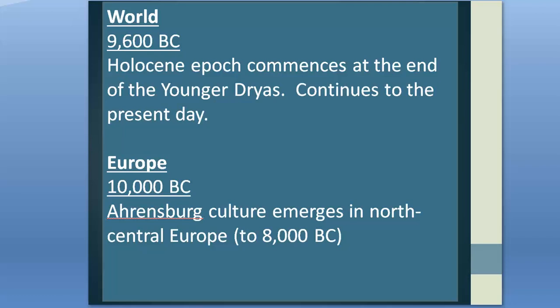At the height of the Younger Dryas in 10,000 BC, a late upper Paleolithic culture known as the Ahrensburg emerged in north-central Europe, covering an area from south and west Scandinavia, north Germany, and western Poland, as well as vast stretches of land now located at the bottom of the North and Baltic Seas. One such settlement was located at Stellmor near Hamburg in Germany, occupied seasonally during October. The Ahrensburg culture used the earliest definitive bow and arrow to hunt wild reindeer in tundra conditions containing arctic white birch and rowan. Archaeologists have also found remains of circles of stones that were possibly the foundations of tipis made of reindeer hides.